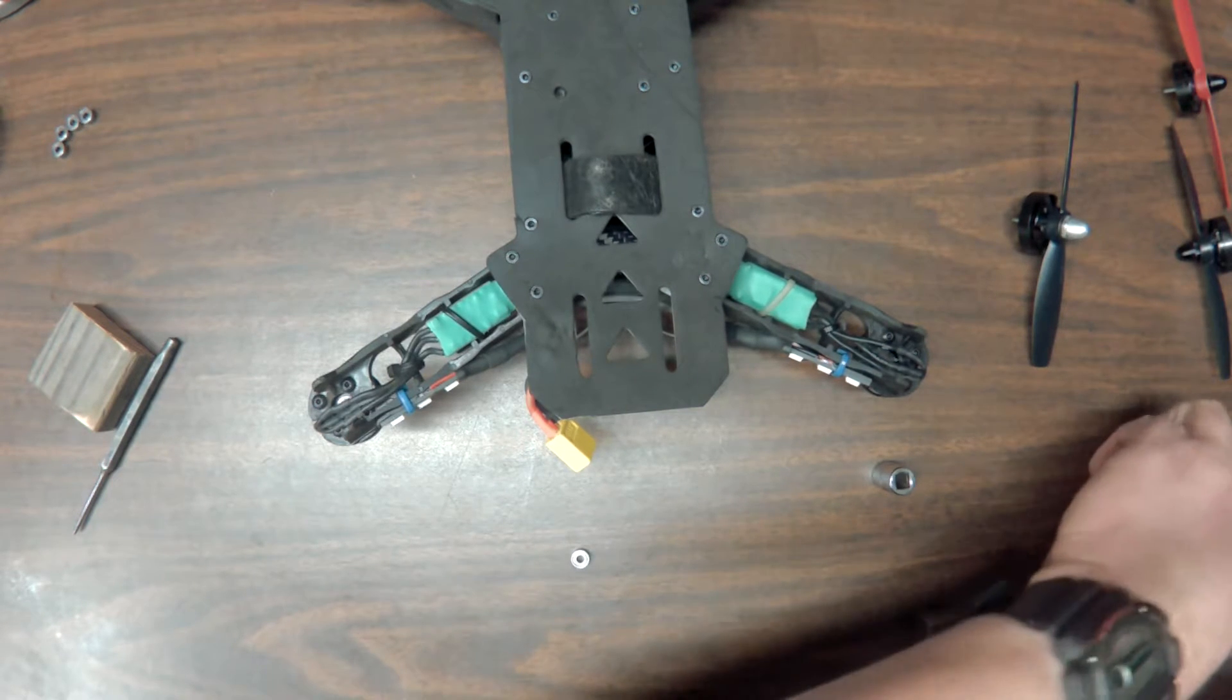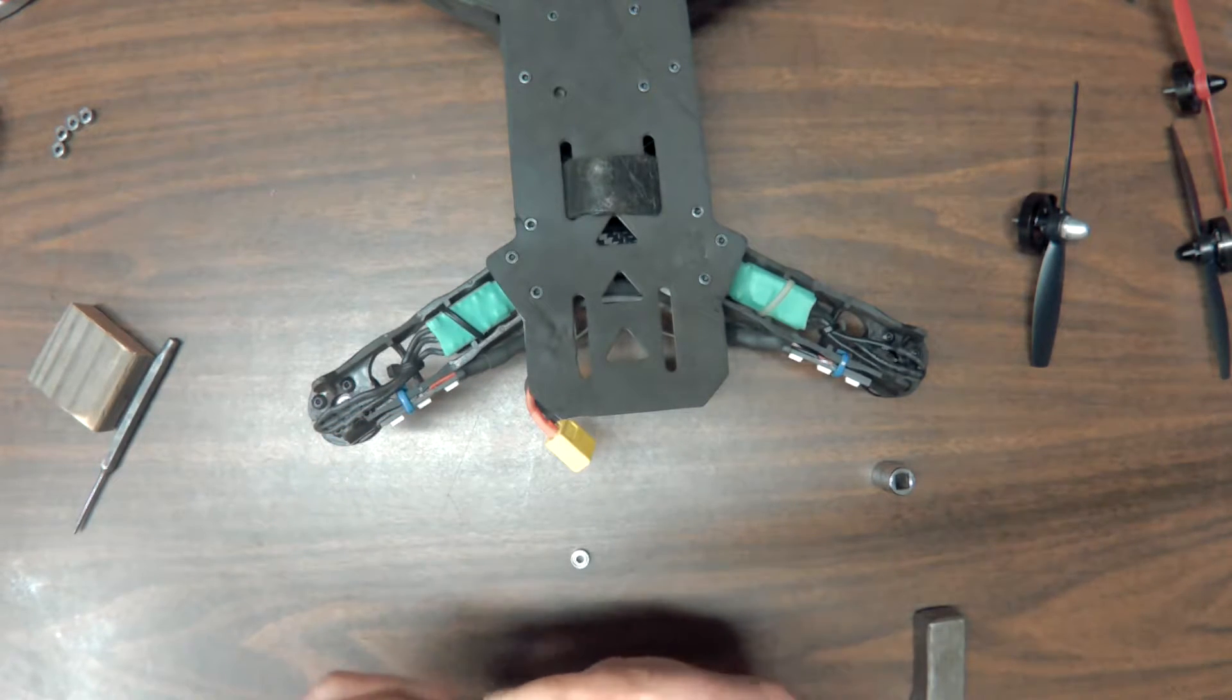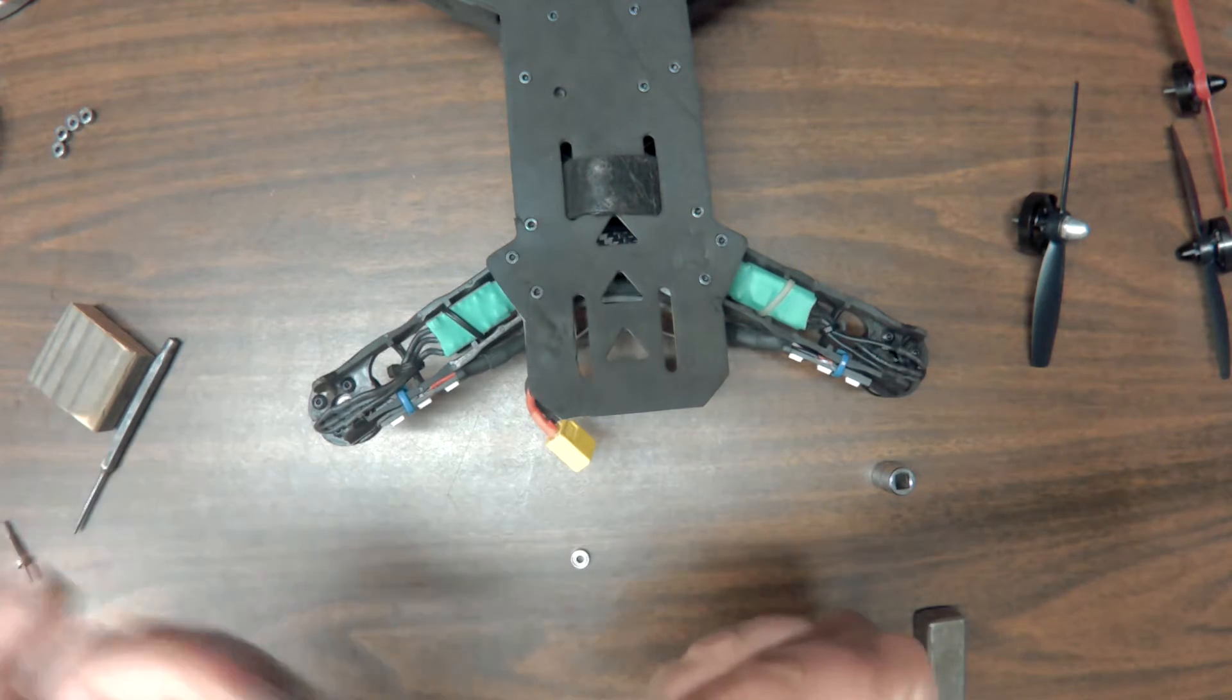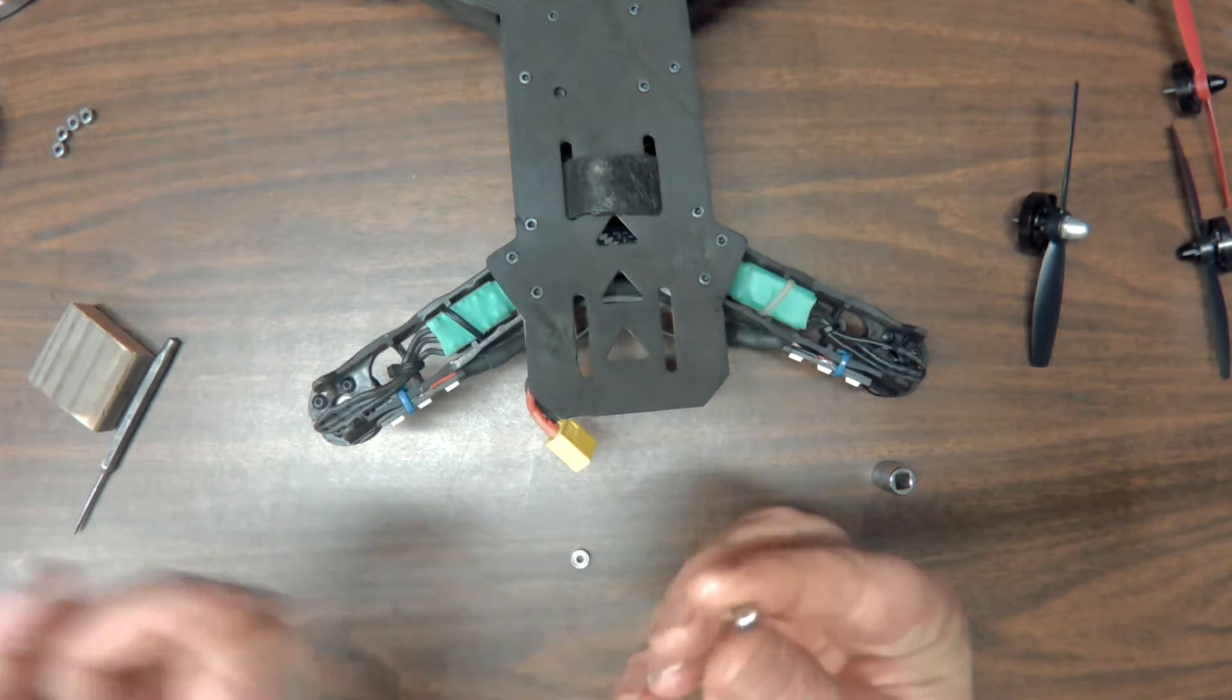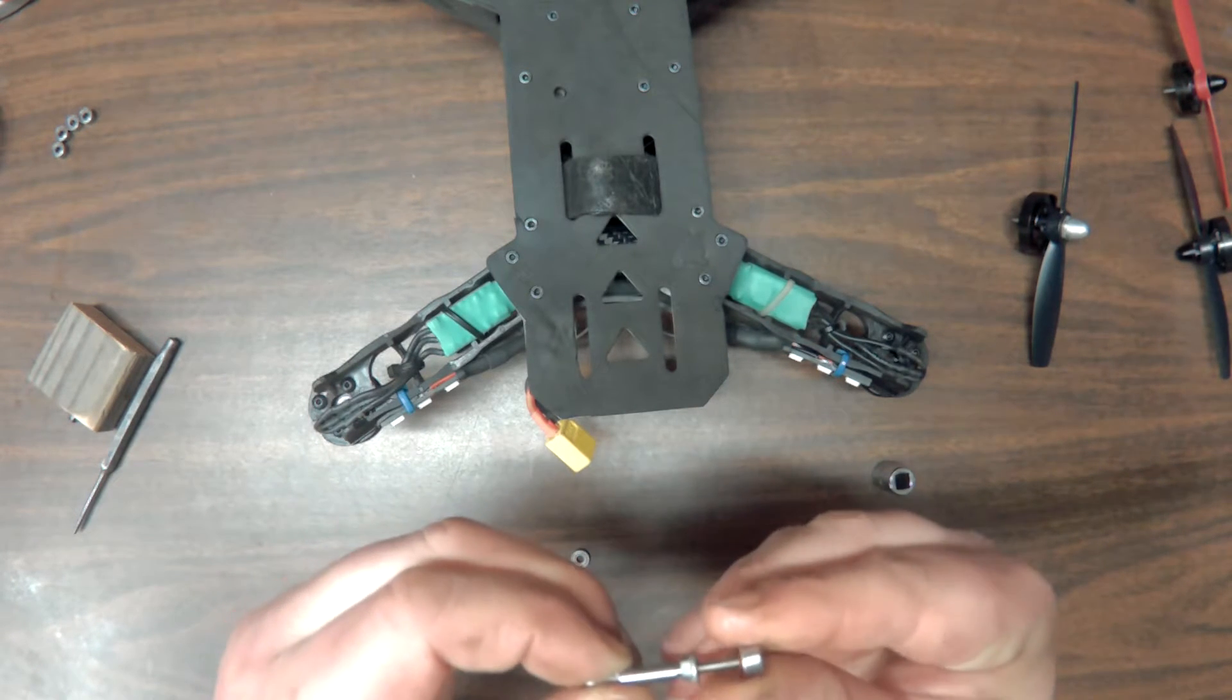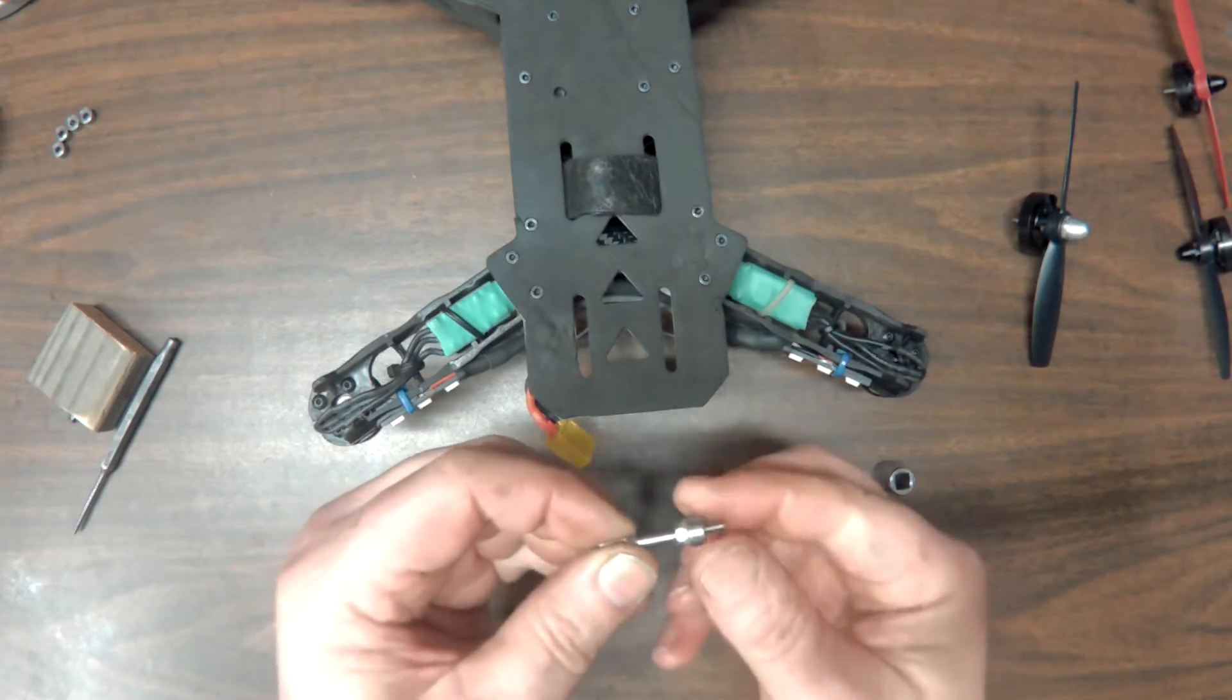And putting them in, a lot easier. Make a little tool like this. Just take a bolt, long, small bolt, something that the bearing will fit over. Like that. And put a nut on the end of it. That serves as a stop. So you're going to use that.